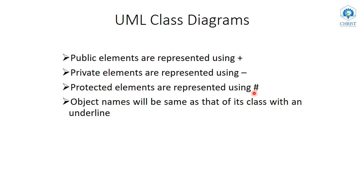We know that objects are instances of a class. Objects can be represented in a class diagram — they are given the same name as the class to which they belong, but with one difference: the object names will be underlined. Now we will see one example of a UML class diagram.